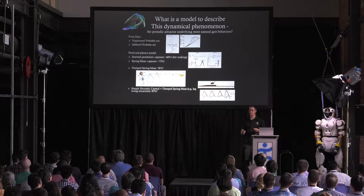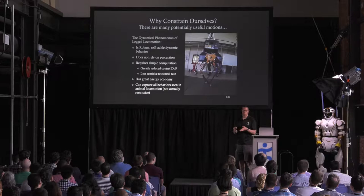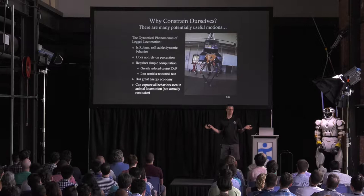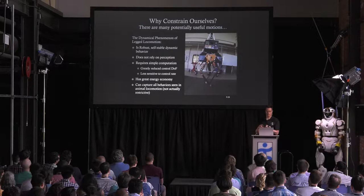But you might ask: why constrain ourselves? If there's this dynamical phenomenon — maybe it's five degrees of freedom or six or four — why would we be looking for that if you can do anything? You have a 47-degree-of-freedom robot, you have optimizers, you can do anything. I would argue that if you do constrain yourself to this dynamical phenomenon and try to understand it and do the engineering to make it happen, it is robust.